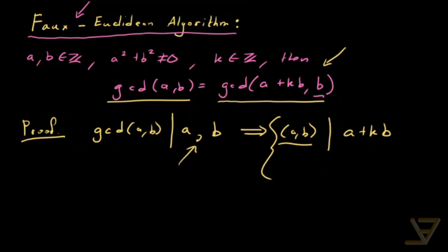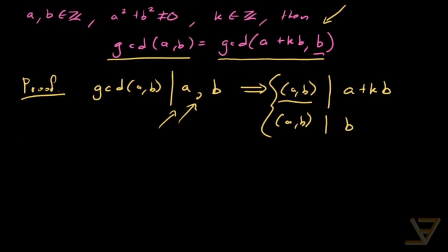And we also know just from what I wrote over here that gcd of a and b also divides b. So what that means is that (a,b) is a common divisor of a plus kb and b.